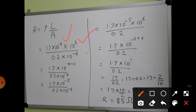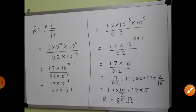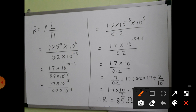In the numerator: 10⁻⁸ × 10³. Using the law of indices, aᵐ × aⁿ = aᵐ⁺ⁿ, so 10⁻⁸ × 10³ = 10⁻⁵ (since −8 + 3 = −5). The denominator has 0.2 × 10⁻⁶. Taking 10⁻⁶ from the denominator to the numerator changes its sign, so it becomes 10⁺⁶.